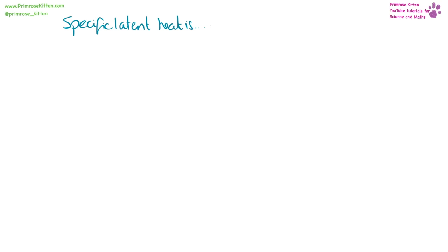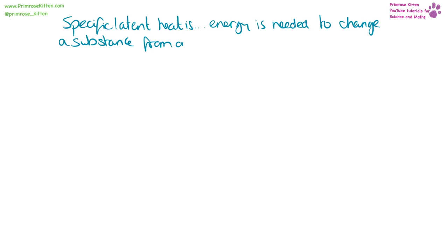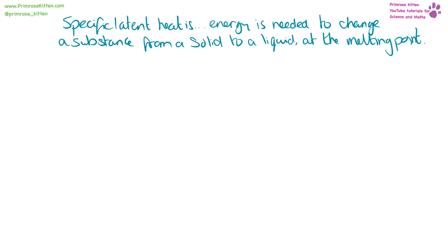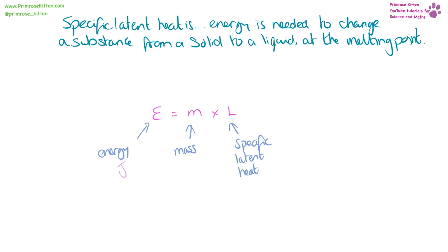Specific latent heat is how much energy is needed to change a substance — for example from a solid to a liquid at the melting point. Remember, if a substance is pure, it will change instantly at one temperature. The equation for this is: energy equals mass times specific latent heat. Units: energy in joules, mass in kilograms, and specific latent heat in joules per kilogram.